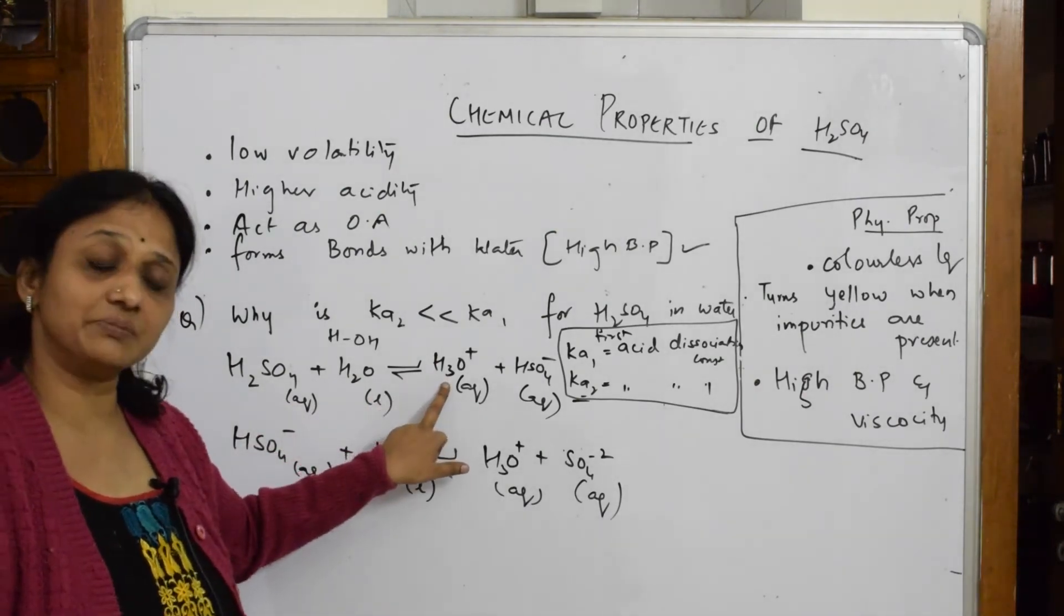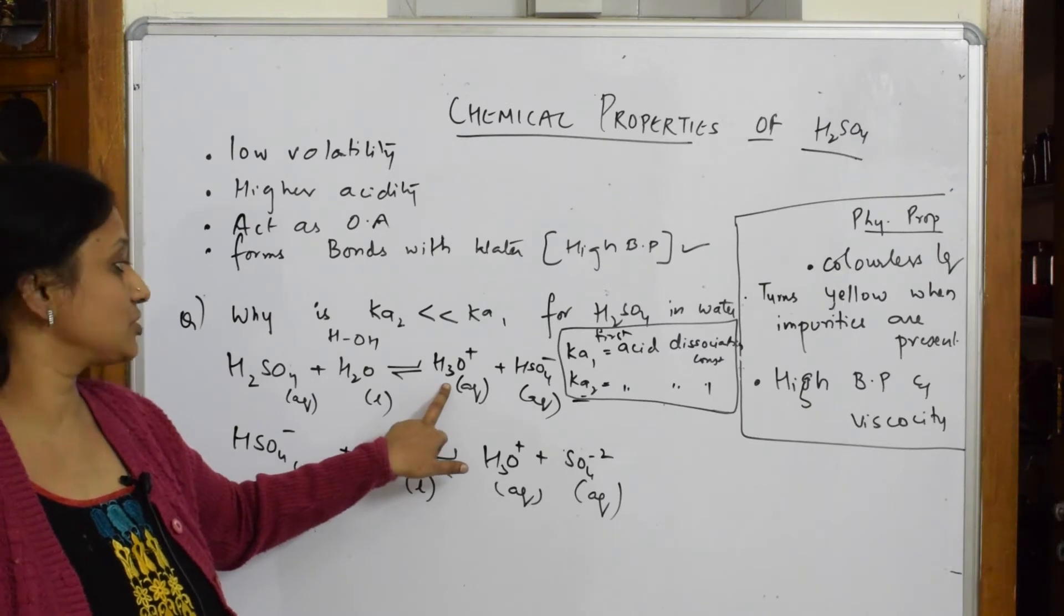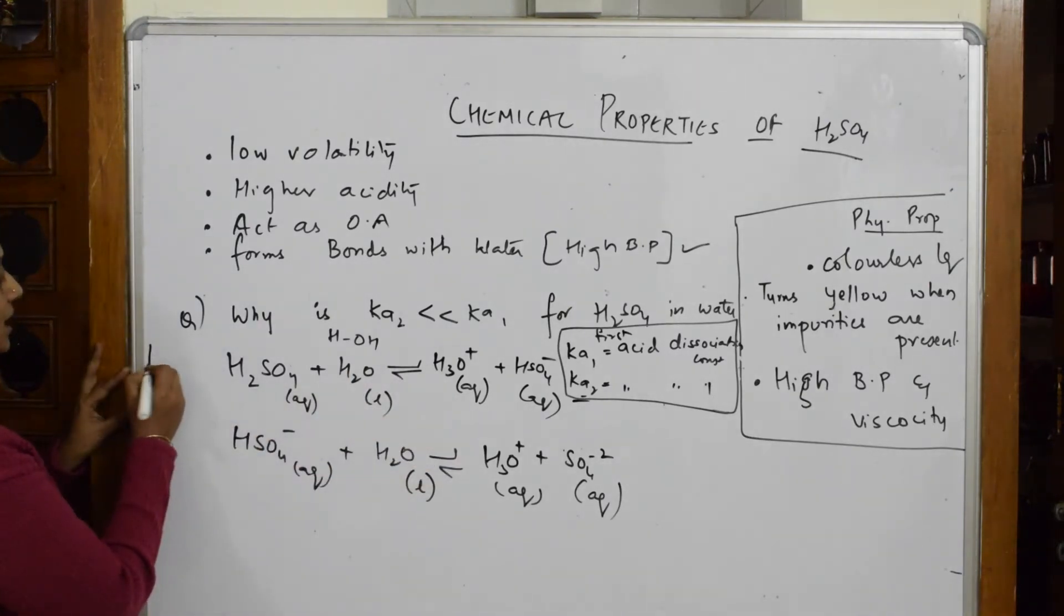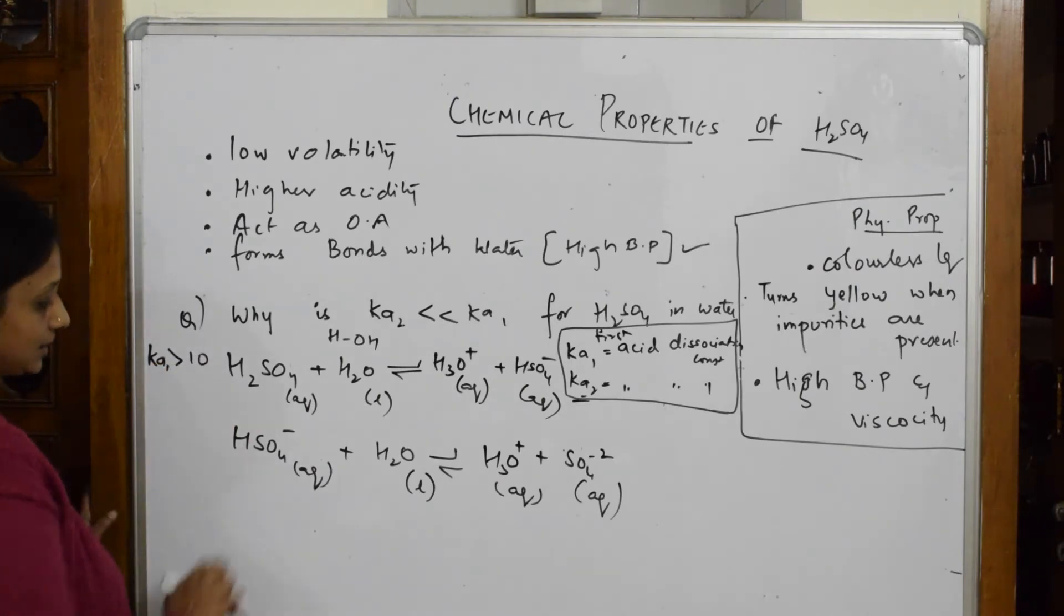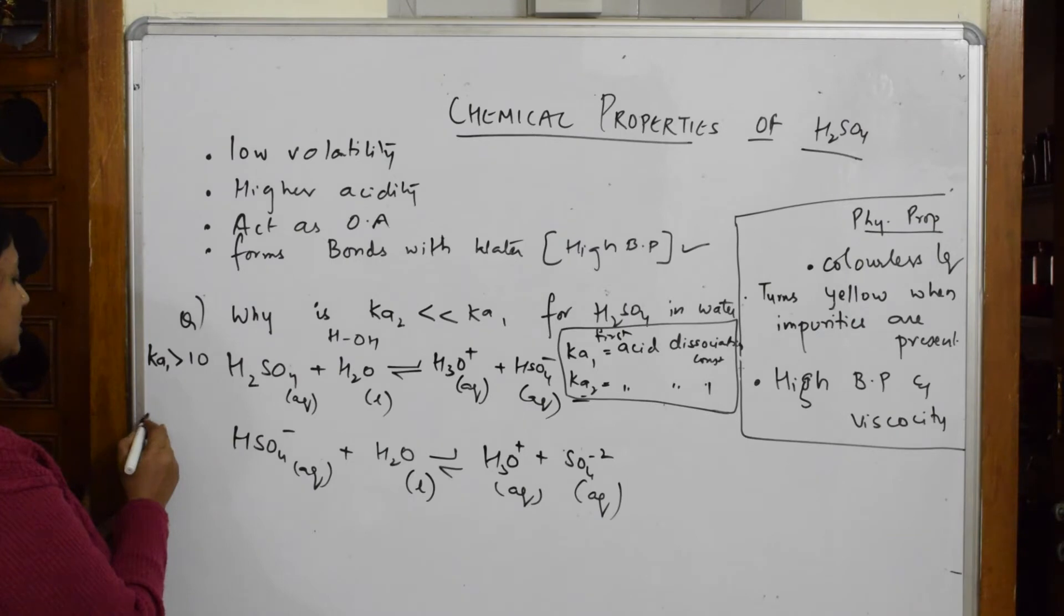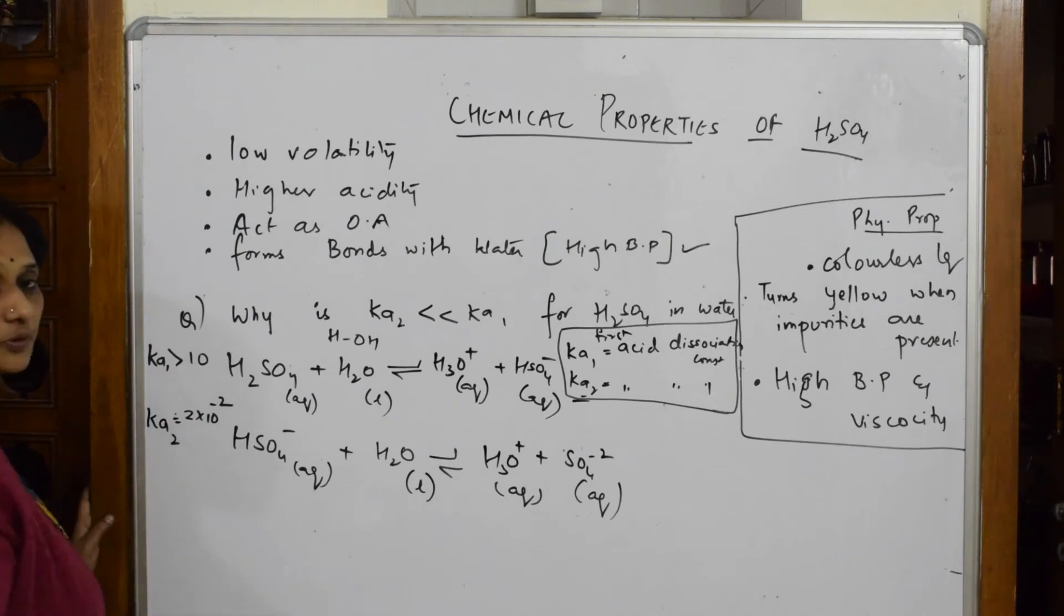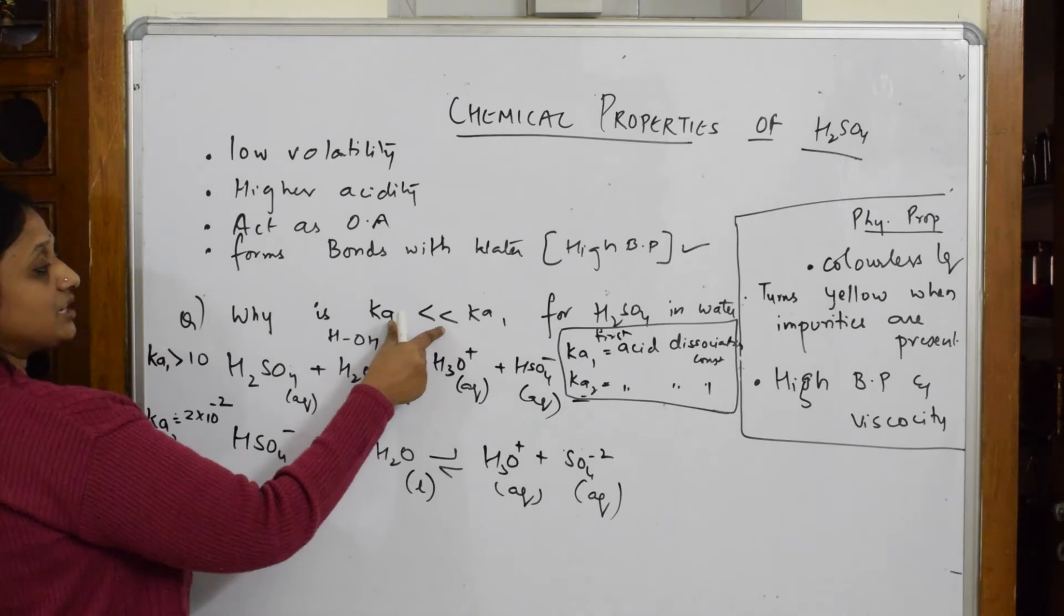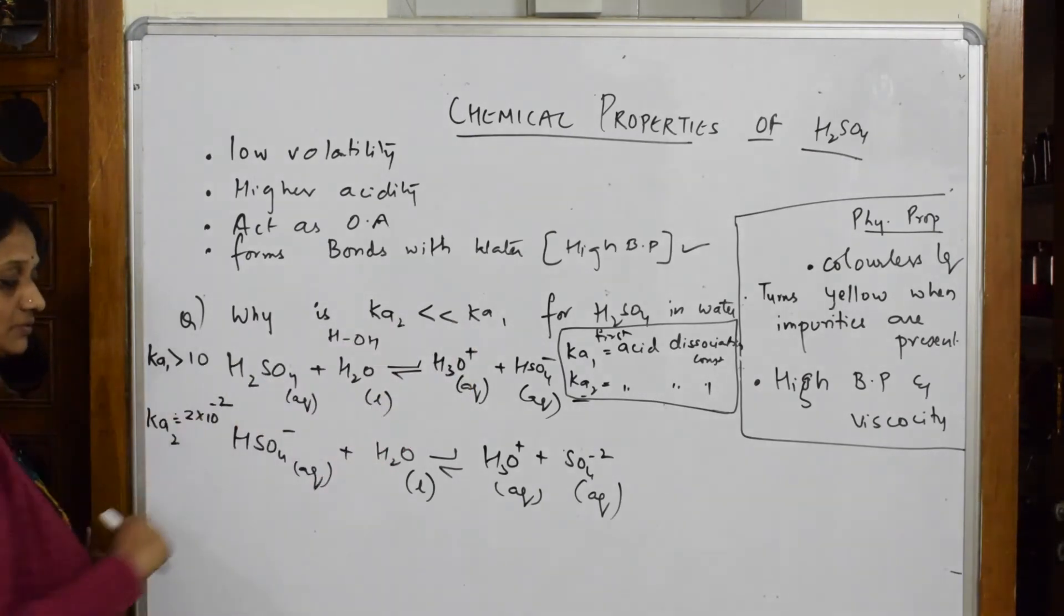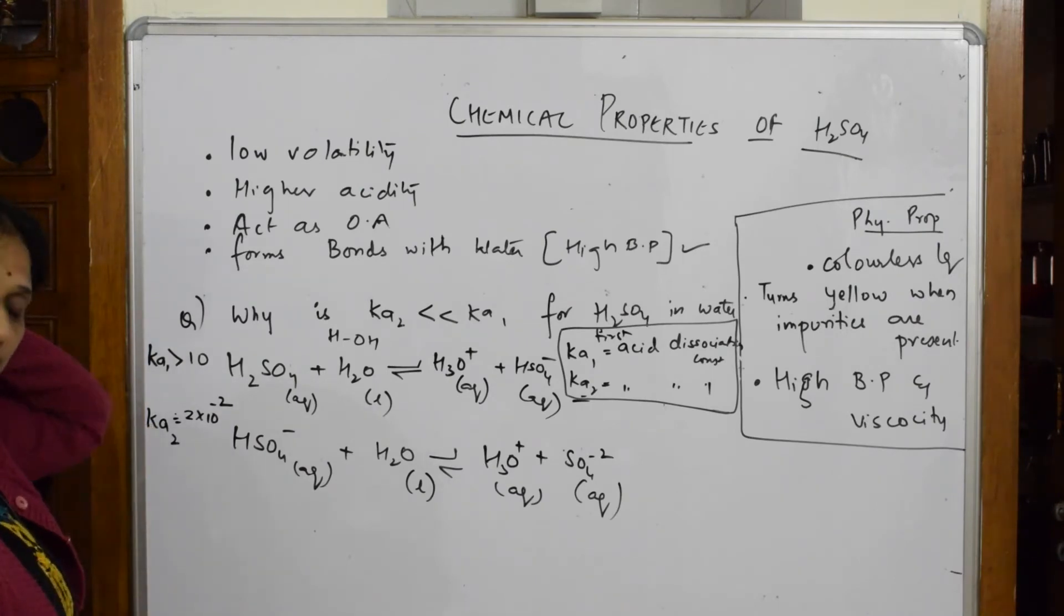The value found was greater than 10. The second one, Ka2, is equal to 2.3 × 10^-2. What are you observing? The Ka2 value is very much lesser than Ka1. Ka1 is almost 10 and this is 2.3 × 10^-2. Why is it less?